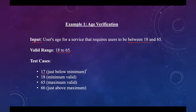Based on the boundaries, we can design the test cases as follows: 17 is just below the minimum (minimum is 18), so 17 is an invalid value. 18 is the minimum valid value. 65 is the maximum valid value. 66 is just above the maximum, so it is invalid. So we have two valid test cases — 18 and 65 — and two invalid test cases — 17 and 66.